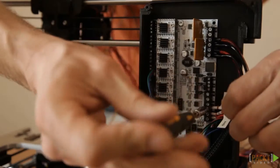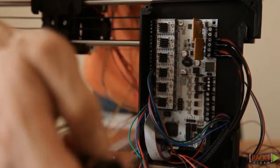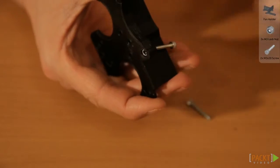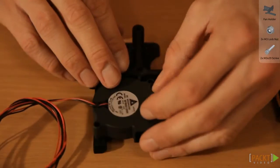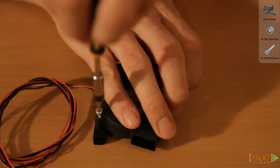In the meantime you can disconnect the extruder again. Prepare the fan holder by putting in two M3 lock nuts. Mount the radial fan to it with two M3 x 20 screws.